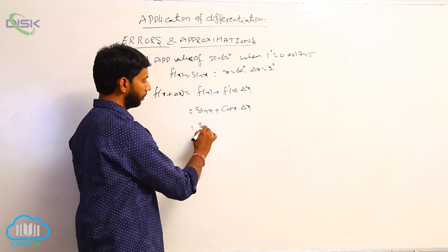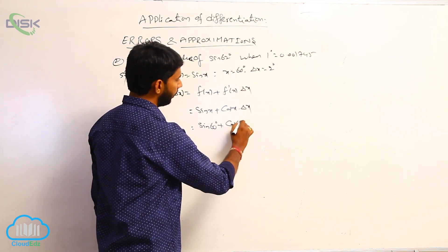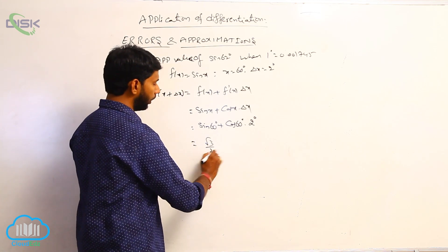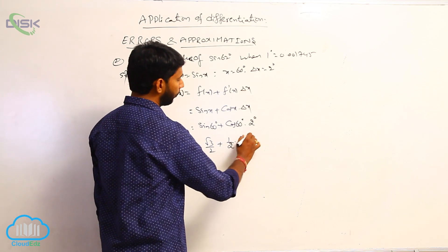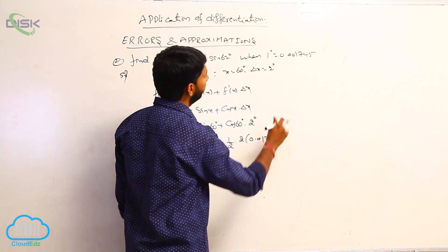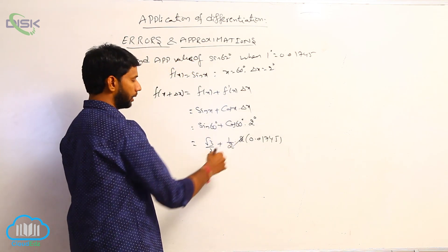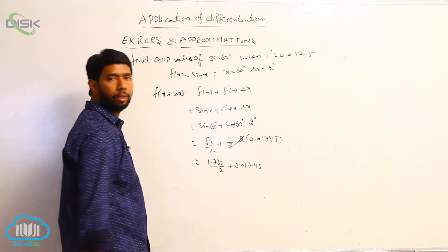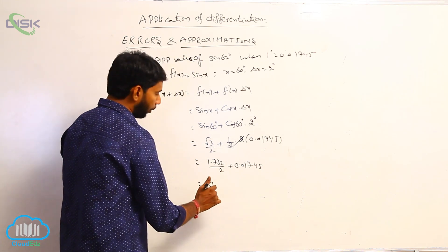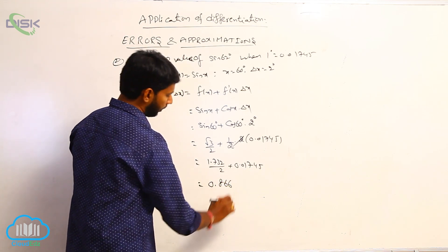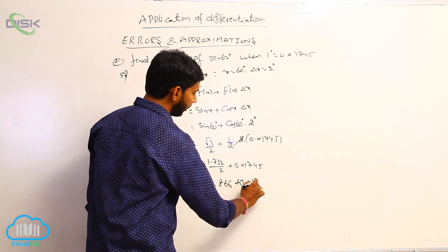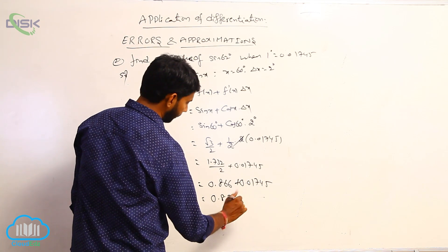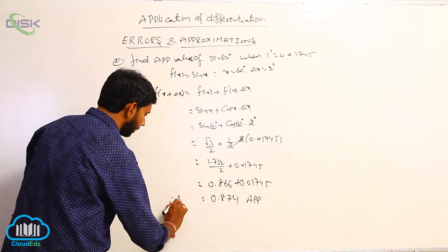Substituting x = 60° and delta x = 2°: sin 60° + cos 60° · 2°. Here sin 60° = √3/2 and cos 60° = 1/2, and 1° = 0.01745, so the 2 cancels. That gives √3/2 + 0.01745 = 1.732/2 + 0.01745 = 0.866 + 0.01745. The approximate value of sin 62° is 0.8784.